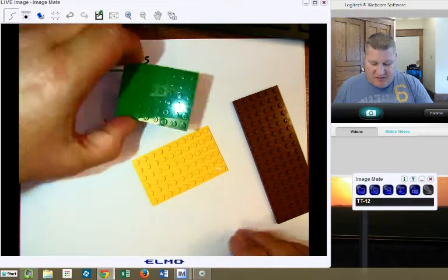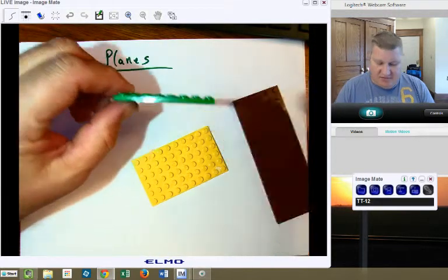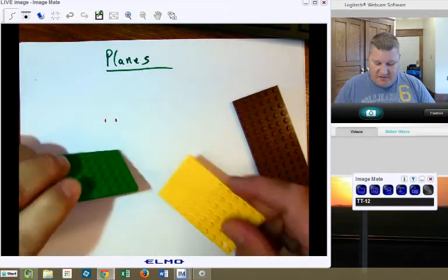Now, you'll notice the planes have two dimensions. They have length and they have width, but they have no height for our purposes. So, we have length, we have width.